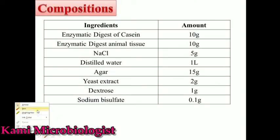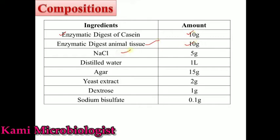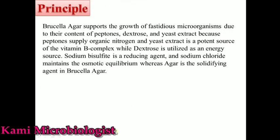The composition of this media includes: enzymatic digest of casein and animal tissue, 10 grams each; yeast extract, 2 grams; dextrose, 1 gram; distilled water, 1 liter; agar, 15 grams; and sodium bisulphate, 0.1 grams. These are the most important ingredients.